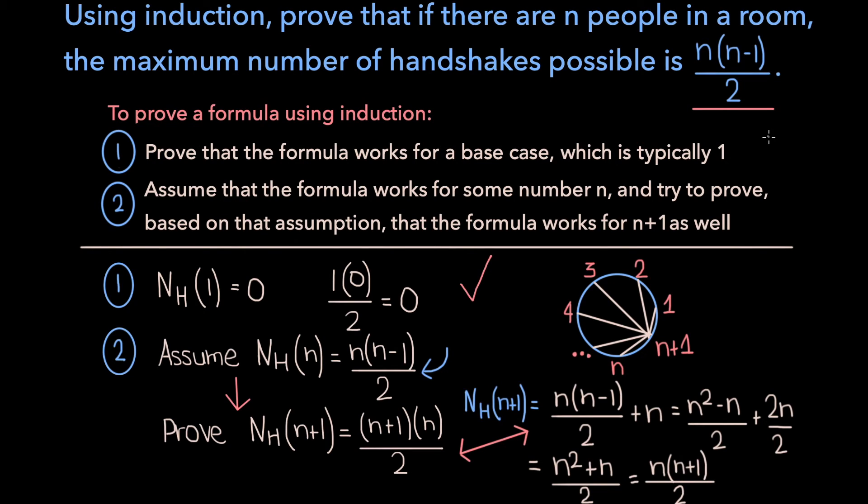And so we've proven that when there are n+1 people in the room, the number of handshakes possible is n times (n+1) over 2. And this is all based on the assumption that our formula works when there are n people in the room. And so ultimately what we've done here in the second step is prove that if the formula works for a given number, it works for the next number as well.